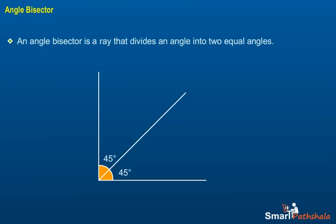Angle Bisector. An angle bisector is a ray that divides an angle into two equal angles.